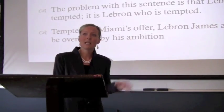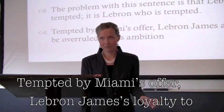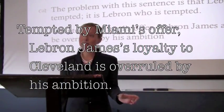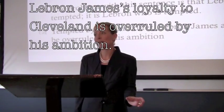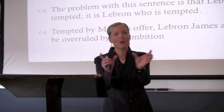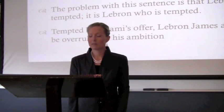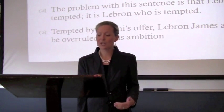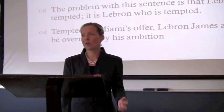Dangling modifiers. A dangling modifier is a word or phrase, usually at the start of a sentence, that does not connect properly to the independent clause — to the thing it's describing. For example, using LeBron James: 'Tempted by Miami's offer,' which is a dependent clause, 'LeBron James' loyalty to Cleveland is overruled by his ambition.' If you think about a dangling modifier as two things that don't correspond — 'Tempted by Miami's offer, LeBron James' loyalty to Cleveland is overruled by his ambition' — who or what is being tempted?